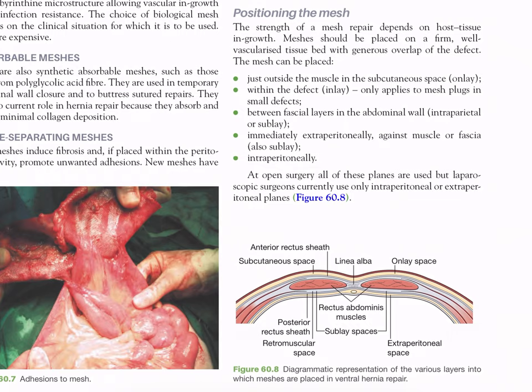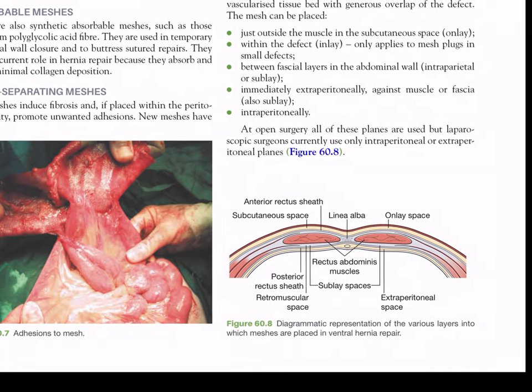The extent of the mesh repair depends on host tissue ingrowth. Meshes should be placed on a firm, well-vascularized tissue bed with generous overlap of the defect. The mesh can be placed in several positions: just outside the muscle in the subcutaneous space (onlay); within the defect (inlay — only applicable to mesh plugs in small defects); between fascial planes in the abdominal wall (intraparietal or sublay); immediately extraperitoneally against muscle or fascia (also sublay); or intraperitoneally. In open surgery all of these planes are used, but laparoscopic surgeons currently use only intraperitoneal or extraperitoneal planes.